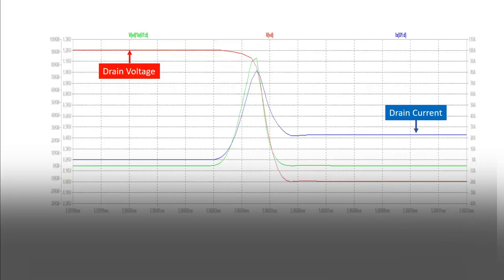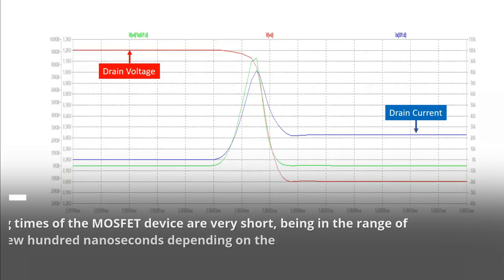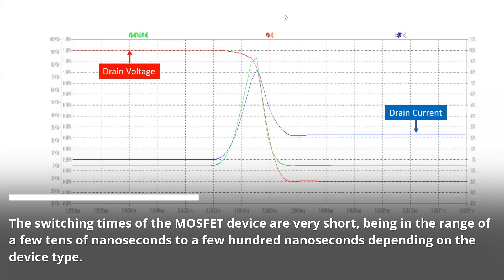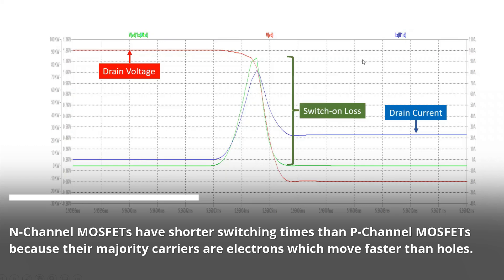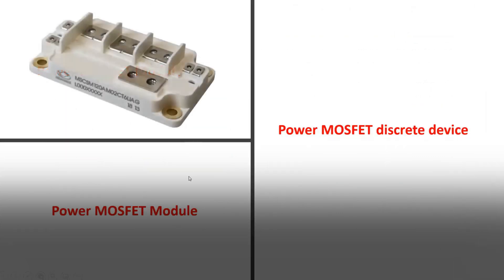The switching times of the MOSFET device are very short, being in the range of a few tens of nanoseconds to a few hundred nanoseconds depending on the device type. N-channel MOSFETs have shorter switching times than P-channel MOSFETs because their majority carriers are electrons, which move faster than holes.